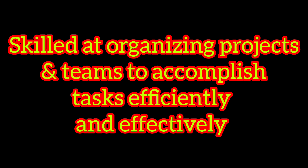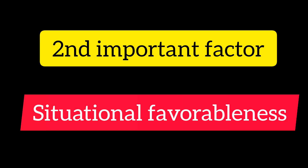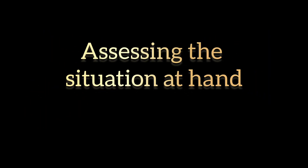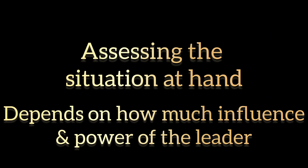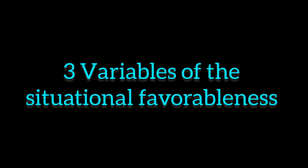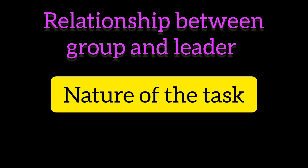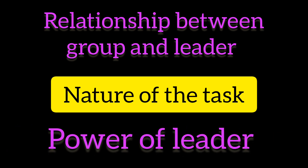Now moving to the second factor, which is situational favorableness. This involves assessing the situation at hand. The favorability of a situation depends on how much influence and power you have as a leader, and it is determined by three variables: the first is the leader-group relationship, the second is the nature of the task, and the third is the power of the leader.